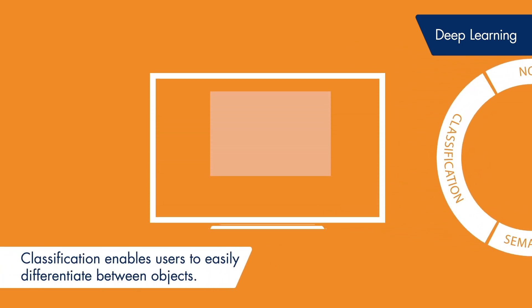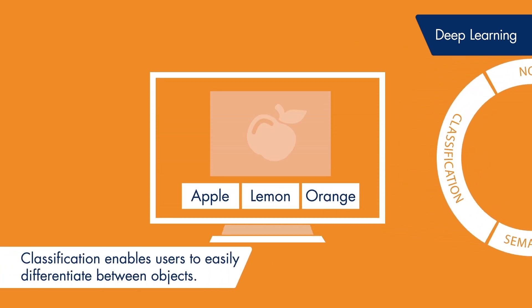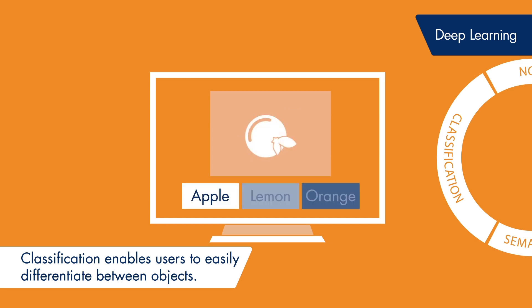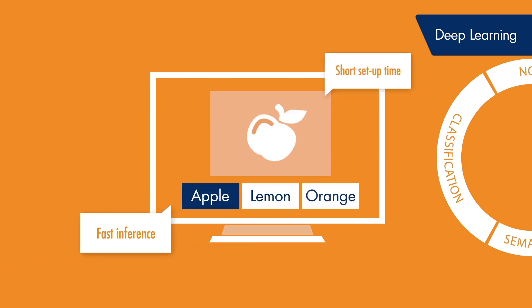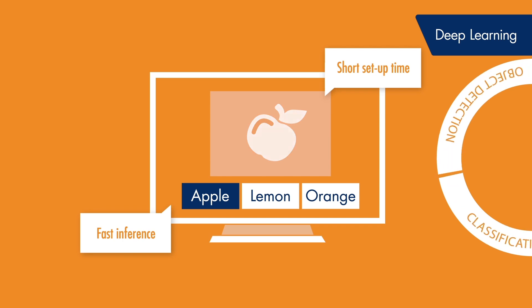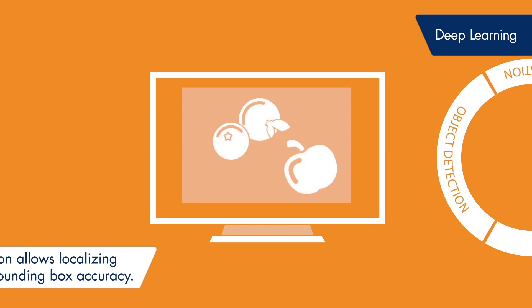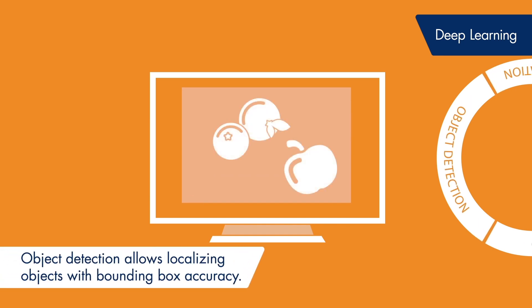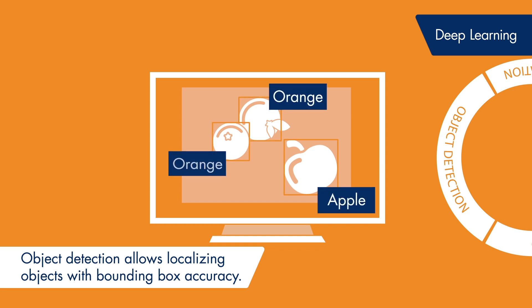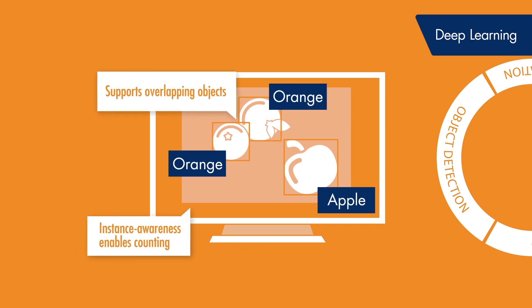Deep learning-based classification allows to easily differentiate between objects. The low labeling effort enables particularly short setup times, and applying the classifier to new data is especially fast. HALCON's object detection localizes trained object classes and identifies them with a surrounding rectangle. Touching or partially overlapping objects are also separated, enabling object counting.